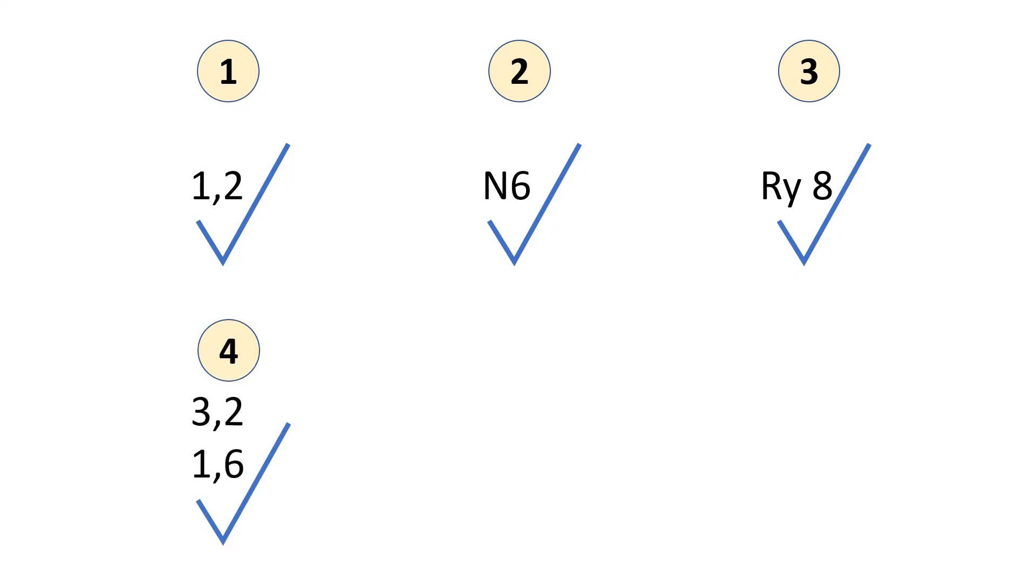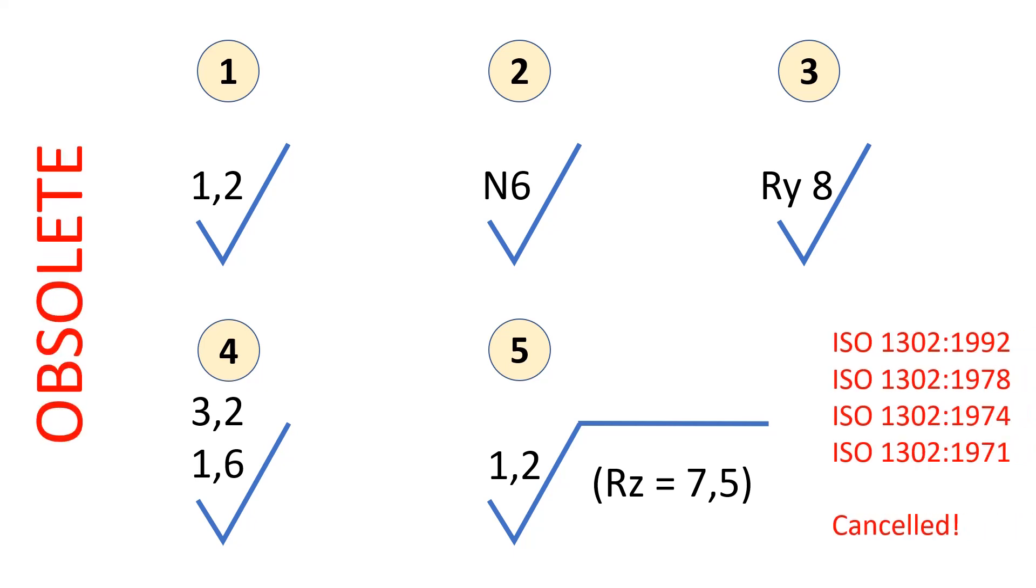Example 4 specified a bilateral tolerance for the RA parameter, with a lower limit of 1.6 micrometers and an upper limit of 3.2 micrometers. Example 5 specified on the left RA with a limit of 1.2 micrometers, and under the root symbol another tolerance for RZ with a limit of 7.5 micrometers. All these indications are now obsolete. They should not be used anymore on drawings.